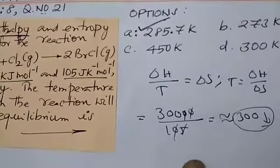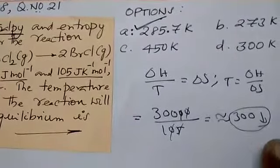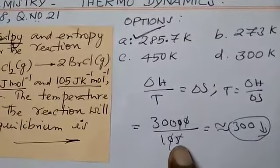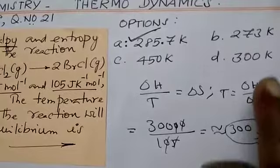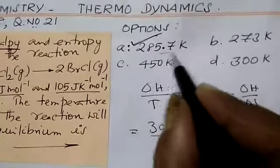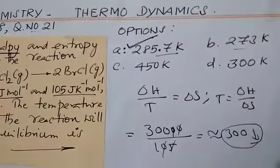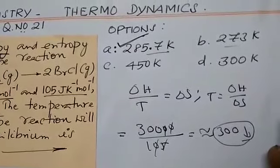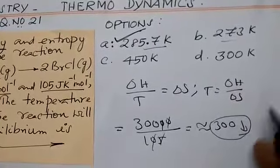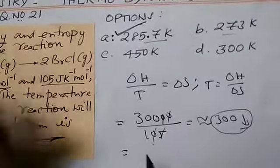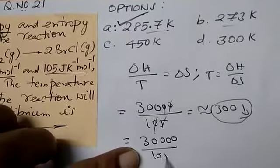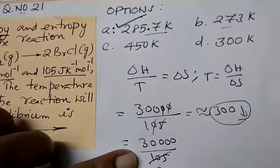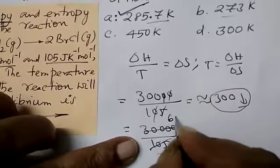We are getting 300. But less than 300 means we have 285 as well as 273. We should have more precise answer. Let me do exact cancellation. Cancel with 5: 6000 divided by 21. Here it is 2, 4, 18, 8 times.